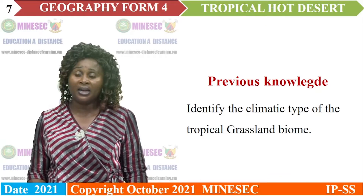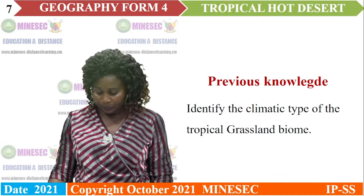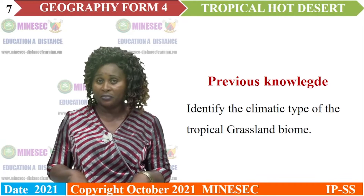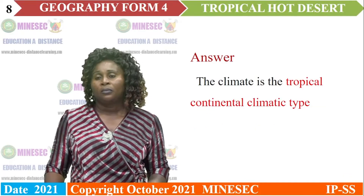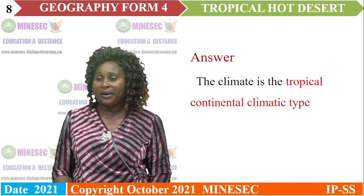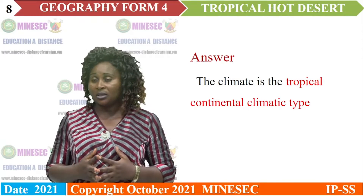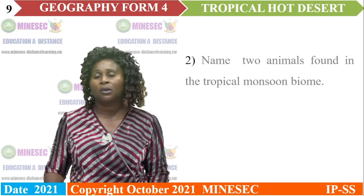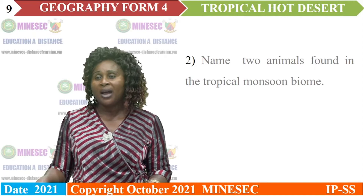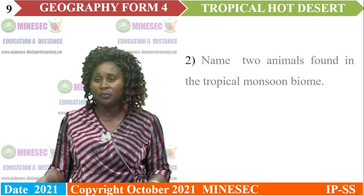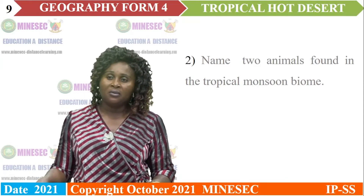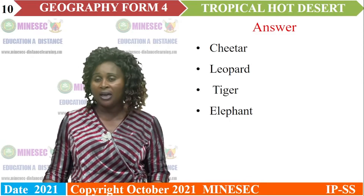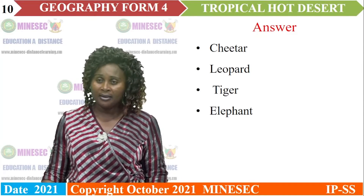The climate of the tropical grassland biome is the tropical continental climatic type. Animals found in the tropical monsoon biome include the cheetah, leopard, tiger, and elephant.